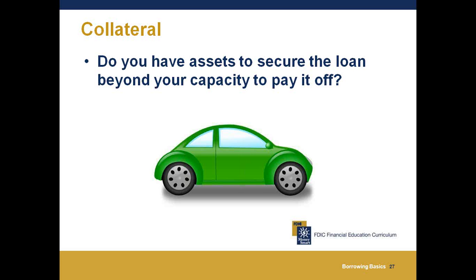The fourth C is collateral — do you have assets to secure the loan beyond your capacity to pay it off? This might include your home, a paid-off vehicle, or other property. A cosigner can help you get a loan if you're unable to obtain one yourself. The cosigner signs the loan documents with you and is equally responsible for repaying the loan if you cannot. If you don't have a credit history, the lender may require a cosigner.